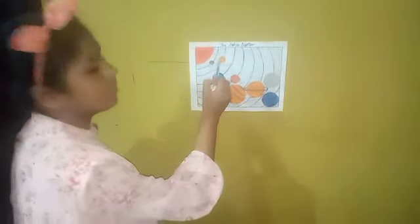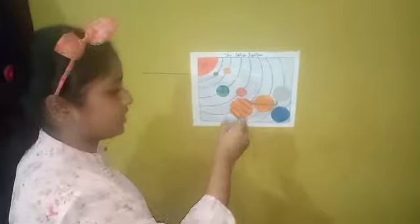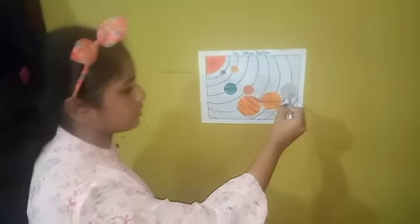We have learned about the sun. Now we will learn about the eight planets. The eight planets are Mercury, Venus, Earth, Mars, Jupiter, Saturn, Uranus, and Neptune. These are the eight planets.